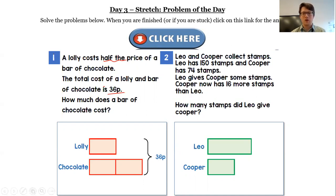So how much does the bar of chocolate cost? Well, this is where the bar model is really helpful because I can see I've got these three equal parts, since we know the lolly is half of the chocolate bar. They add up to 36p, so 36 divided by 3 gives me 12 if I know my times tables.